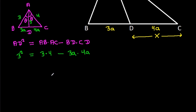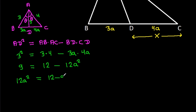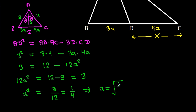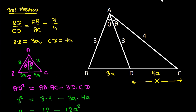So it will be 3² equals 3 times 4 minus 3a times 4a, giving 9 equals 12 minus 12a². So 12a² equals 12 minus 9, that is 3, meaning a² equals 3 over 12, which is 1 over 4. So a equals the square root of 1 over 4, that is 1 over 2. And we have X is 4a, so X equals 4 times 1 over 2, so X is 2.